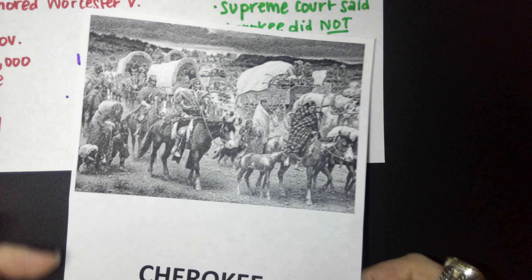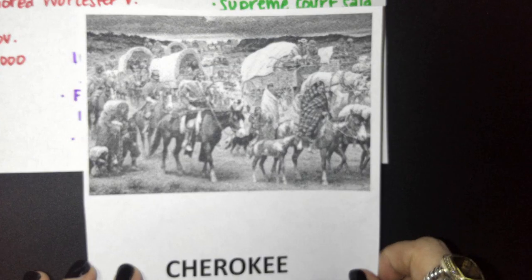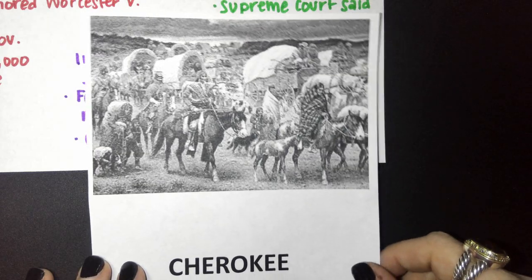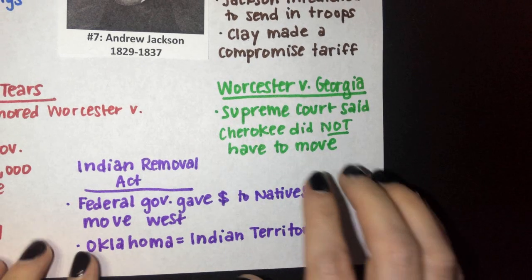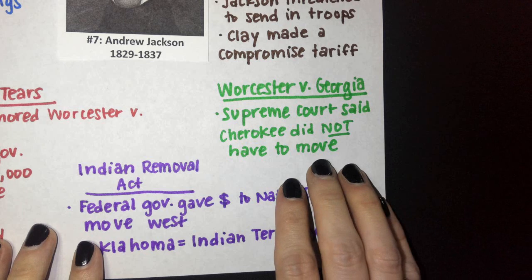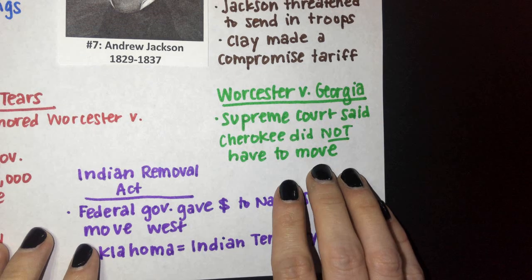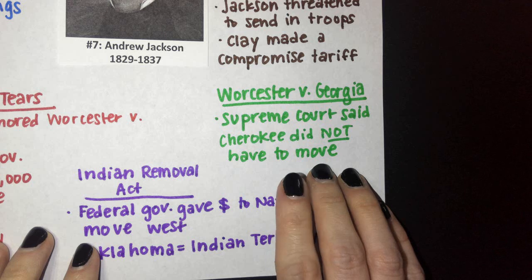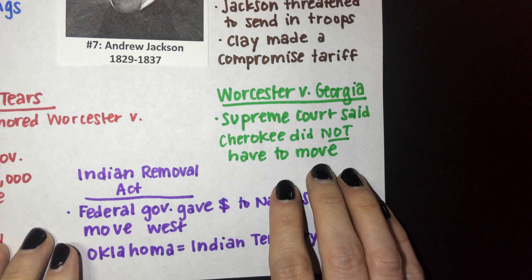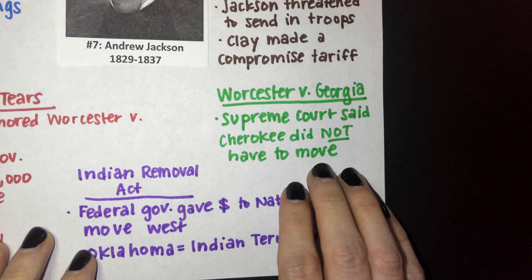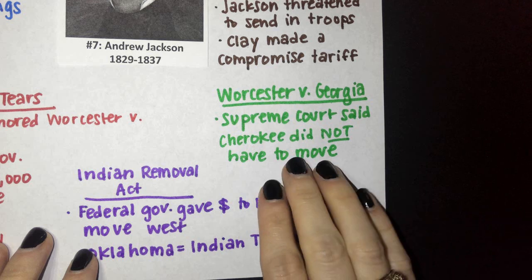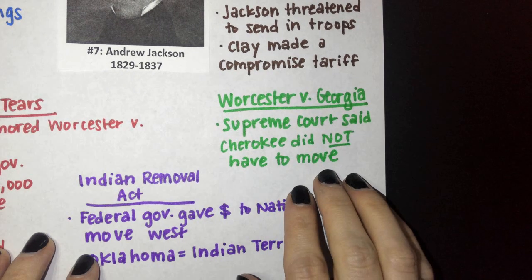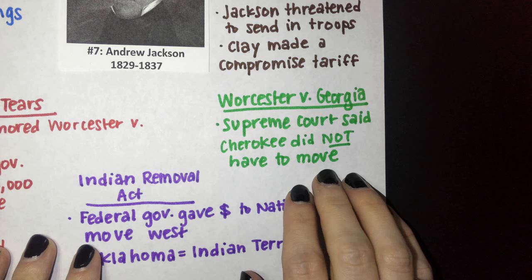The Cherokee felt that they had lived on their land — land given to them in the 1700s by a federal treaty — and should not have to move. They took their case all the way to the Supreme Court in Worcester v. Georgia. Interestingly, Chief Justice John Marshall chose to side with the Cherokee, ruling that the Cherokee did not have to move and did not have to comply with the Indian Removal Act. They could stay put.